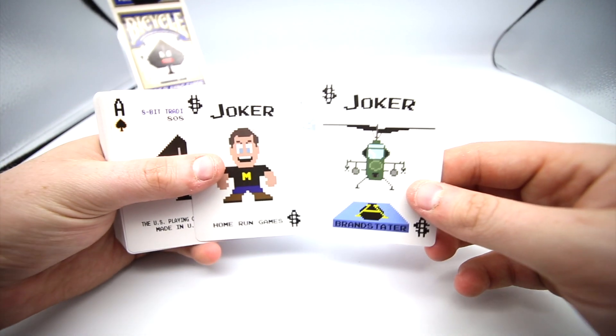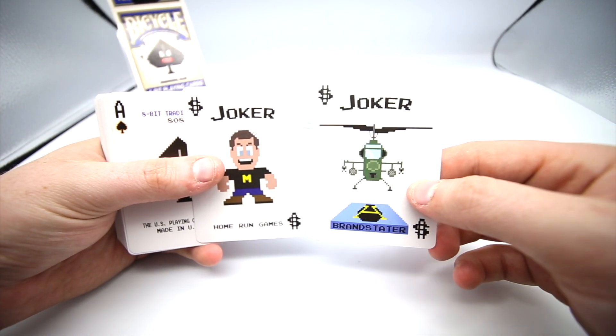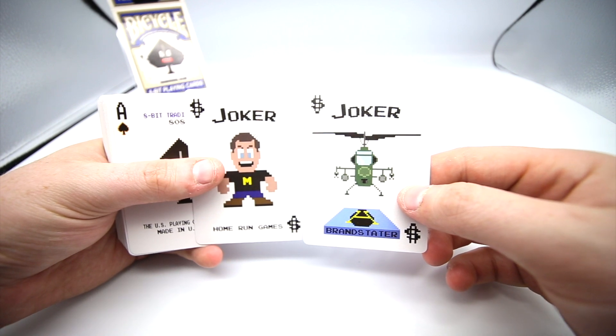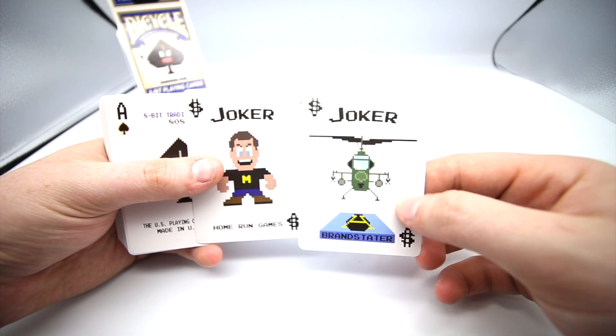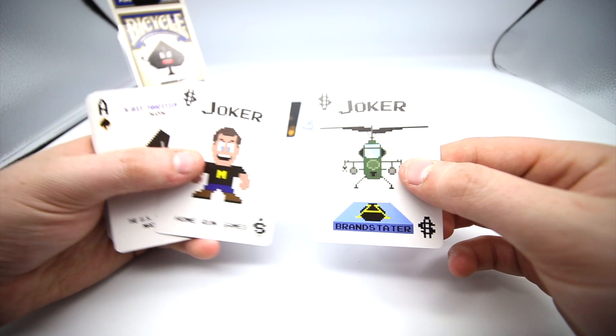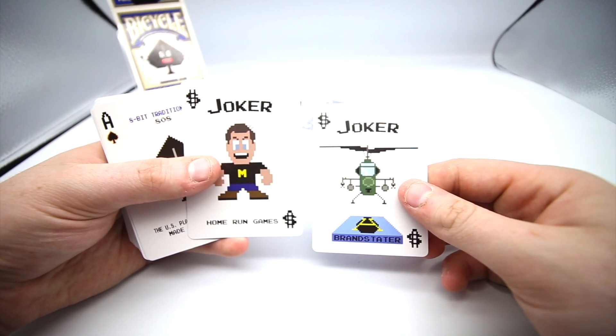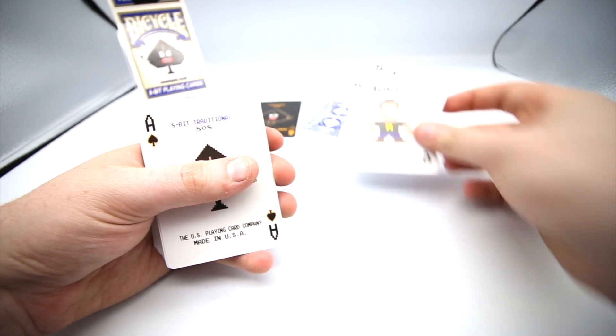You then get the rest of the cards—all these cards are pixelated. First of all, you get Joker, Joker. You get a helicopter there landing on a brand's tower, it says, with the little dollar sign that's pixelated. And you also get the man there that has the exact same design, so you get two of those, which is quite cool.